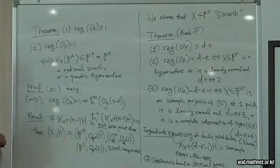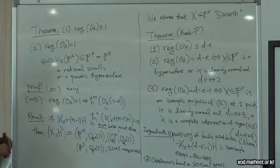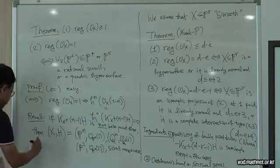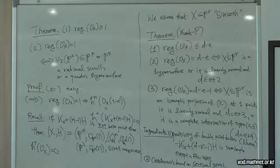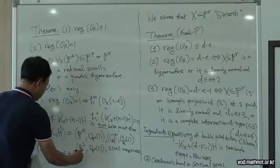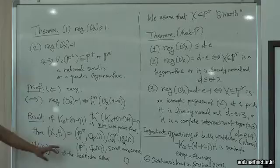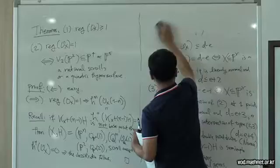So if H^0(K_X + (N−1)H) = 0, then K_X + (N−1)H is not base point free, and (X, H) should be one of those pairs. The regularity condition also implies the irregularity is 0, so the classification easily follows — one can check which of these varieties satisfies the conditions.